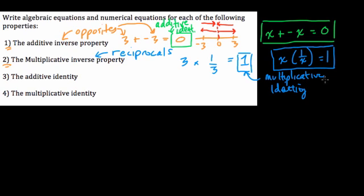And just to show you, this also works for fractions. 2 thirds times 3 halves. Well, these are reciprocals because if we work this out, we get 6 over 6, and that's 1. So these are reciprocals of each other, and this shows you the multiplicative inverse property.